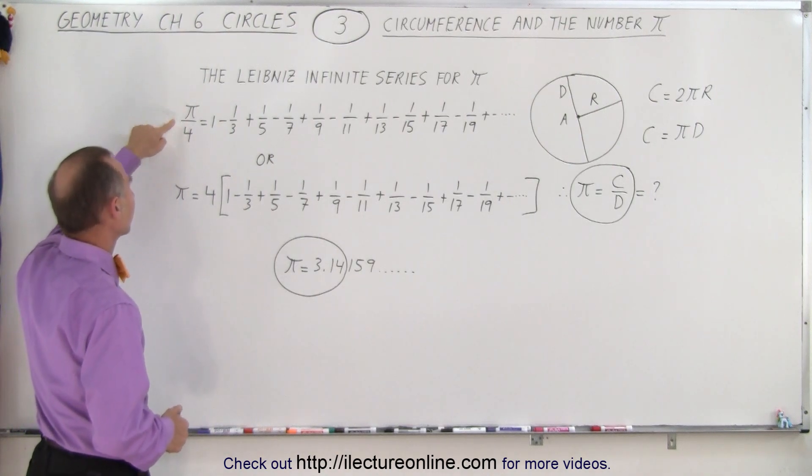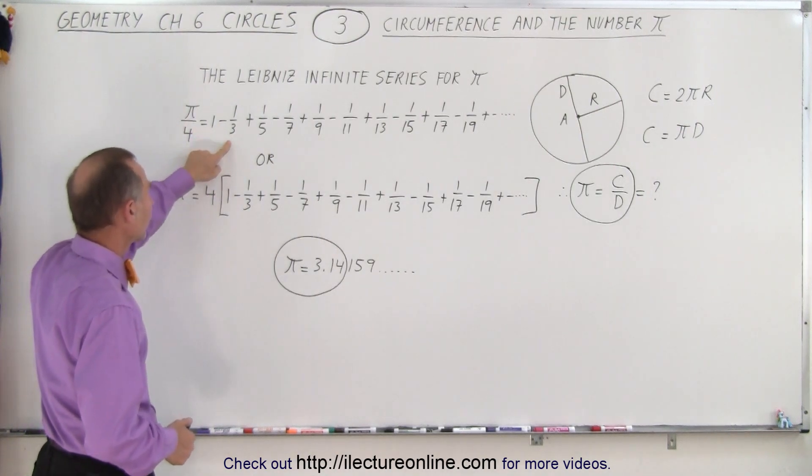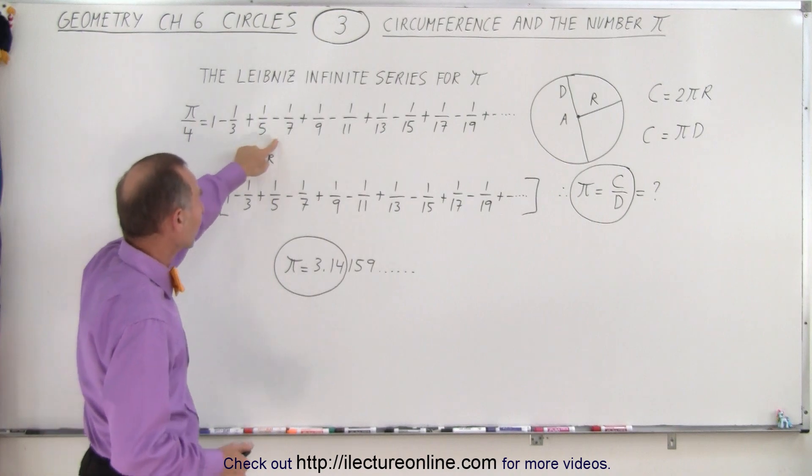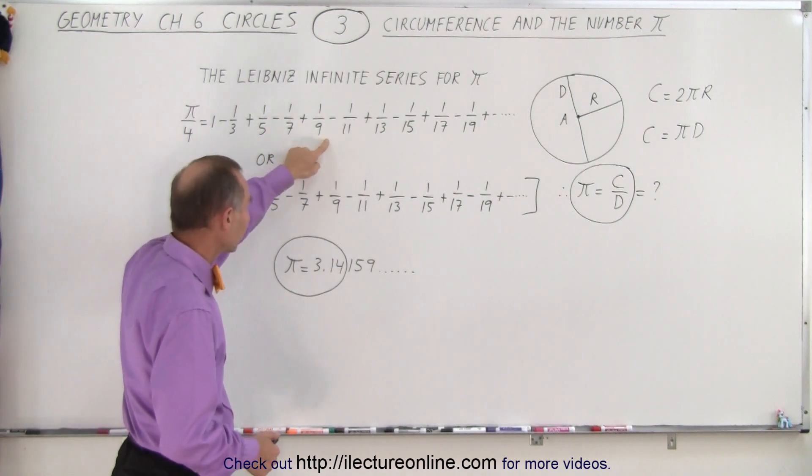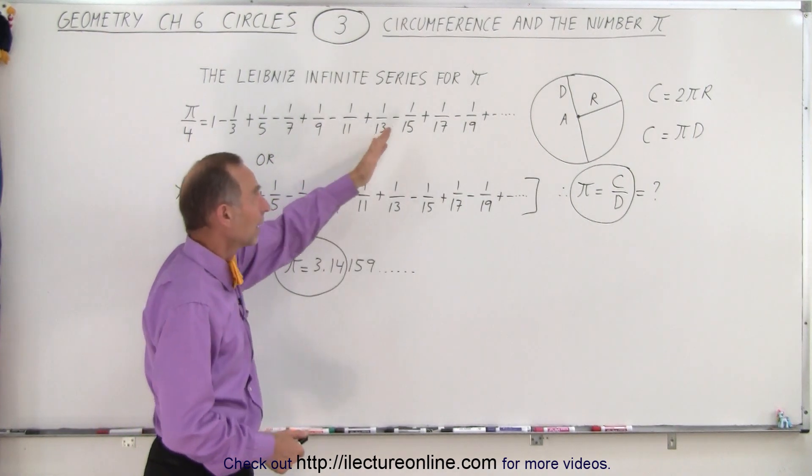So he figured out that π over 4 was equal to 1 minus a third plus a fifth minus a seventh plus a ninth minus one-eleventh plus one-thirteenth, and on and on and on.